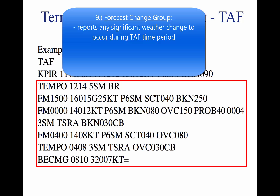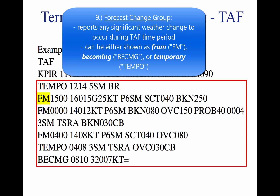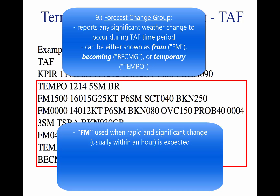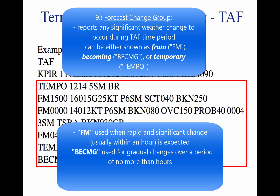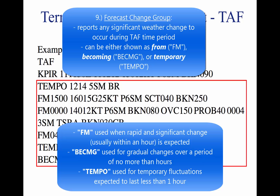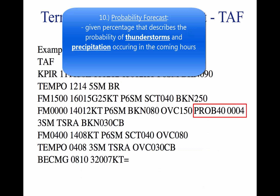Nine, forecast change group. For any significant weather change forecast to occur during the TAF time period, the expected conditions and time period are included in this group. This information may be shown as from (FM), becoming (BECMG), and temporary (TEMPO). FM is used when a rapid and significant change, usually within an hour, is expected. BECMG is used when a gradual change in the weather is expected over a period of no more than two hours. TEMPO is used for temporary fluctuations of weather expected to last less than one hour. Ten, probability forecast — a given percentage that describes the probability of thunderstorms and precipitation occurring in the coming hours. This forecast is not used for the first six hours of the 24-hour forecast.